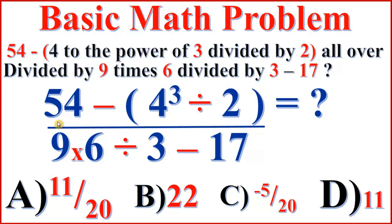So we have a fraction here. The numerator is 54 minus parentheses 4 to the power of 3 divided by 2, parentheses — all over 9 times 6 divided by 3 minus 17. If you think you know the answer, put that into the comment section. I'm going to show you the correct solution step by step.